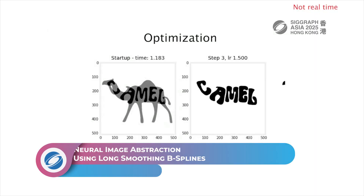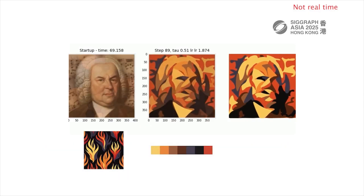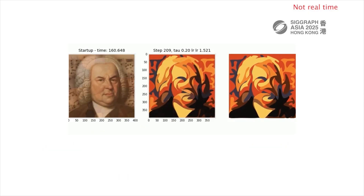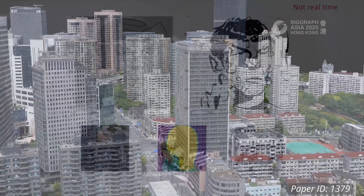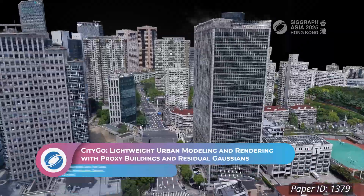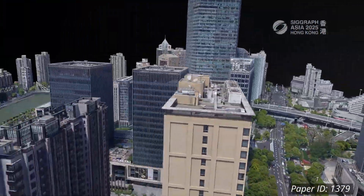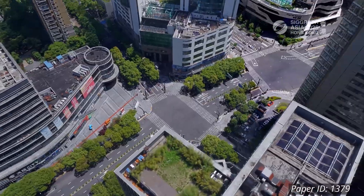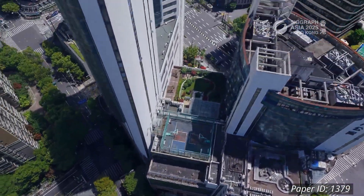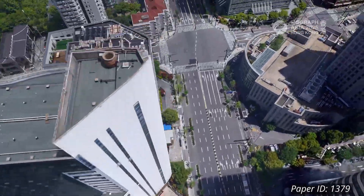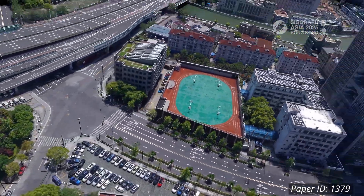If you want super-smooth vector graphics, this method integrates smoothing B-splines into a standard differentiable vector graphics pipeline. Finally, a method for producing accurate and efficient modelling of large-scale urban scenes for AR navigation: Citigo combines textured proxy geometry with 3D Gaussian splatting to produce a lightweight, photorealistic rendering of urban scenes from aerial perspectives.